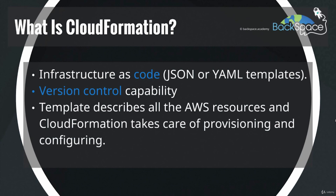Those files are in either JSON, or JavaScript Object Notation, or YAML, which stands for Yet Another Markup Language. That template describes all of the AWS resources that you need to deploy, and then CloudFormation will interpret that text file and will take care of the provisioning and configuring of that infrastructure.